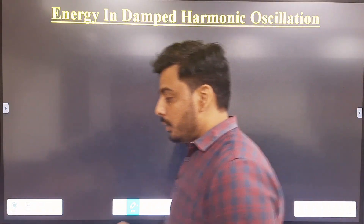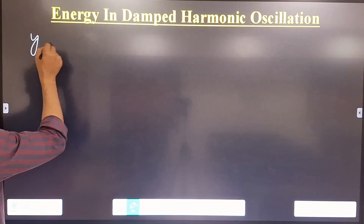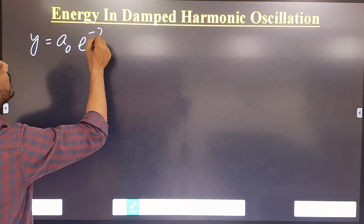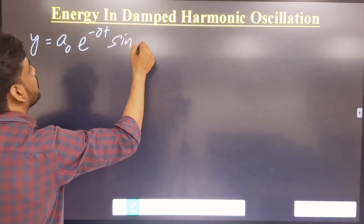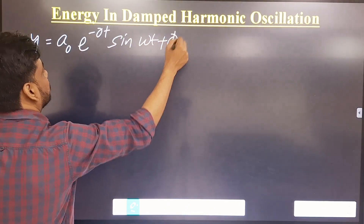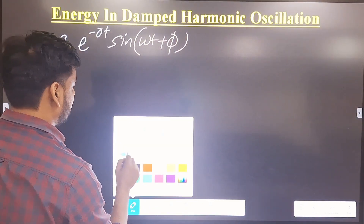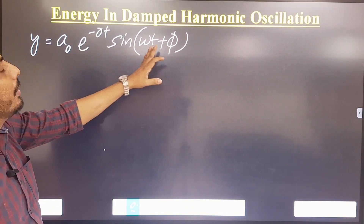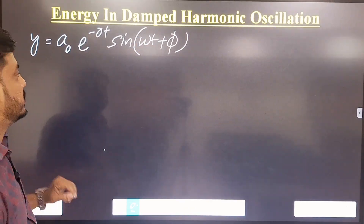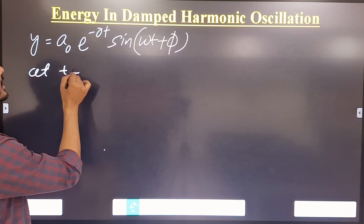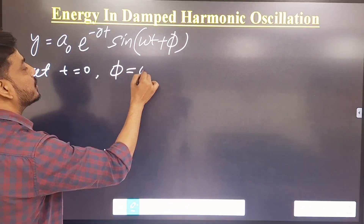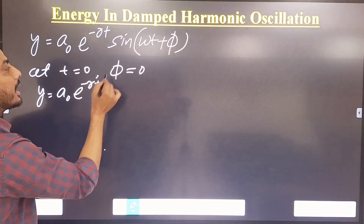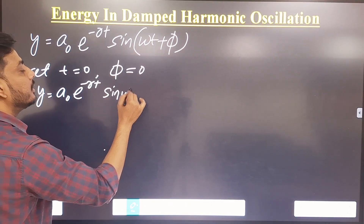We already know that the solution of the damped harmonic oscillation equation is y equal to a-naught e to the power minus rt, multiplied by sin(ωt + φ). This is the solution we already know, where a-naught is a constant, r is the damping constant, ω is the frequency, and φ is the phase difference. At the initial point when t equals 0, φ is 0, so we can write y equal to a-naught e to the power minus rt times sin(ωt).